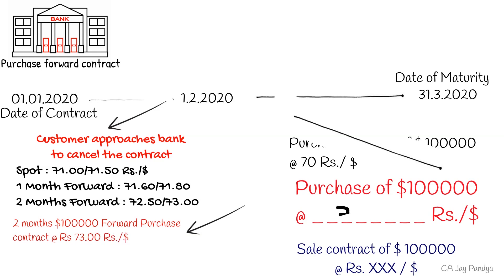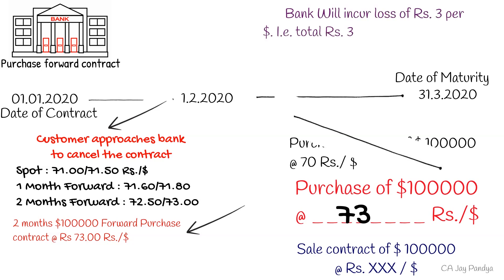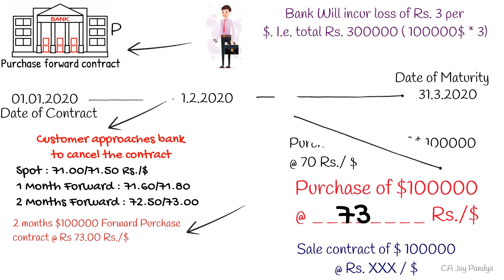Since the bank is purchasing 1 lakh dollars, the ask rate will be applicable, that is rupees 73. The bank will incur a loss of rupees 3 because the original contract was at rupees 70 and now it will be purchasing at rupees 73. So the total loss will be rupees 3 lakhs. The customer will pay rupees 3 lakhs to the bank and cancel the underlying contract.